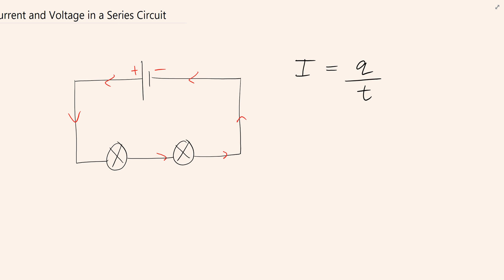And you can imagine that we've got these little charges. They could be electrons, they could be positive charges moving around the circuit and they are going to encounter those lamps.